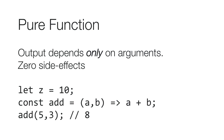A pure function — the output depends only on the arguments, and we have zero side effects. In this case, I have a really simple little add function. It takes two numbers and returns their sum. We call add with five and three, we get eight. The variable Z, set to ten, is there to show that we don't talk to Z, we don't mutate Z, we don't involve Z at all. This is a pure function.